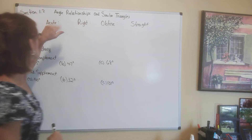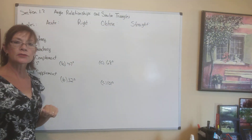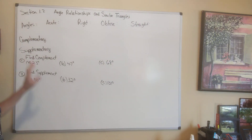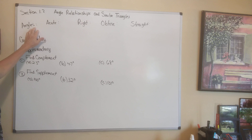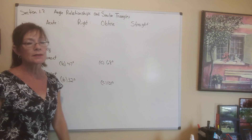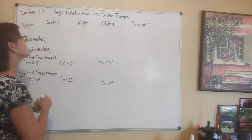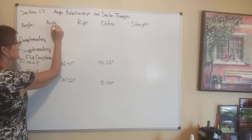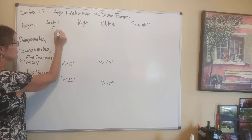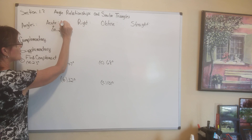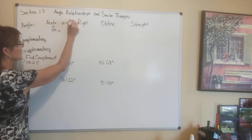Now we are ready to talk a little bit about triangles to introduce that into our angles discussion. We're in section 1.2. First, let's discuss angles. There are names that we give to different angles depending on their size. If we have an angle that is called acute, it might look like this. Acute angles are angles that are less than 90 degrees.